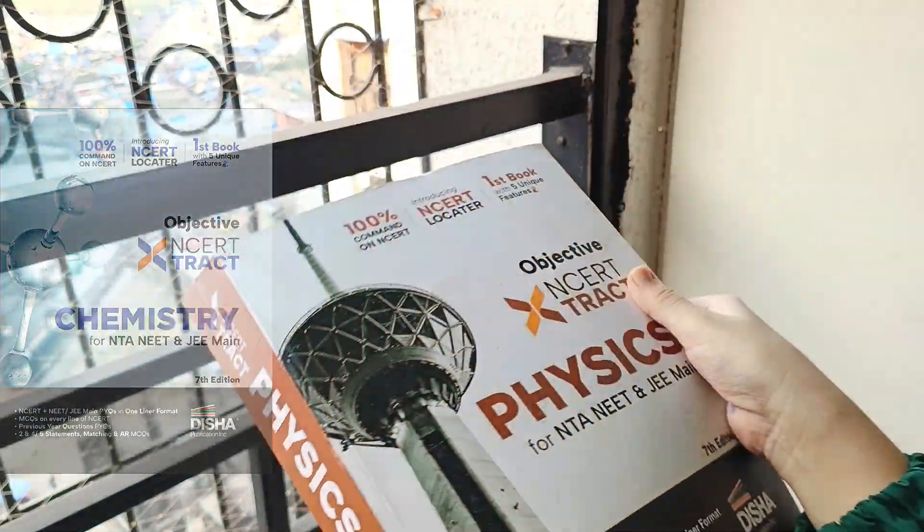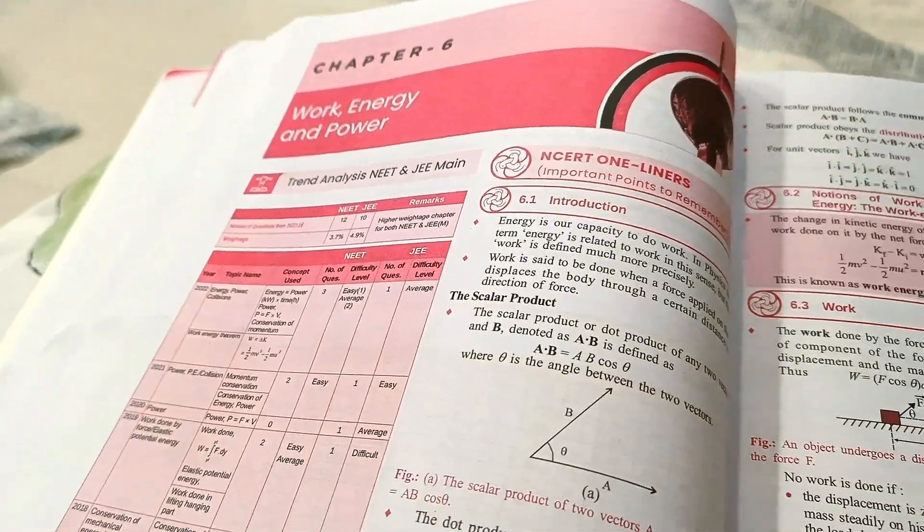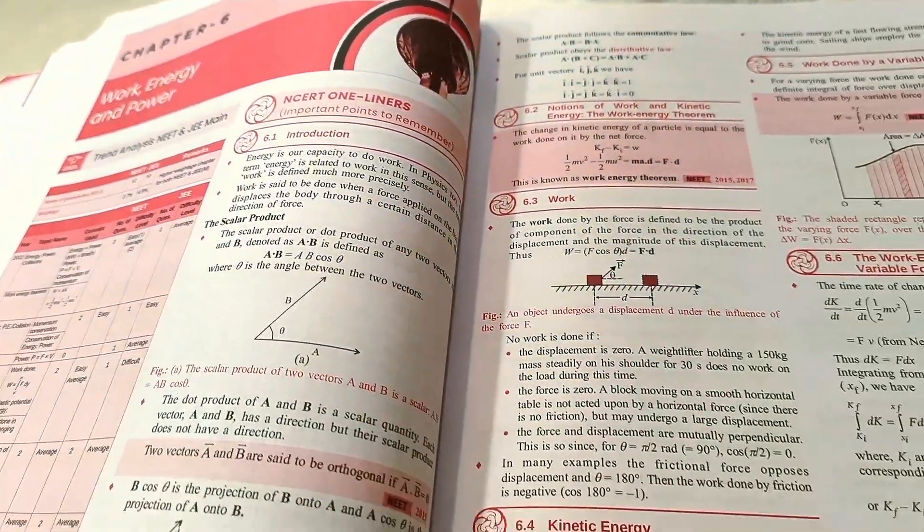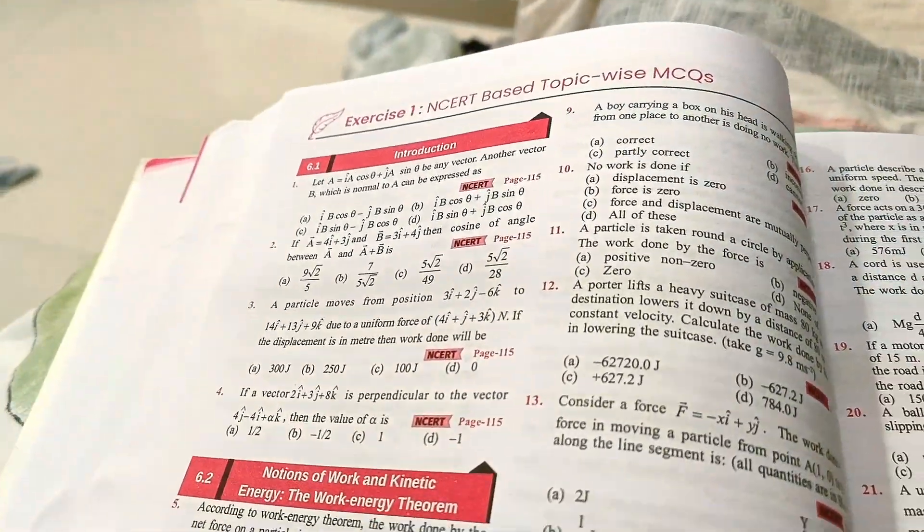So this is the book that I was talking about, even in my previous video. This one book has everything that we need. It has the previous year trend analysis of JEE and NEET exam. This book also has the NCERT one-liners which will act as the summary of the chapter, then they have given the tips and tricks to solve the questions.